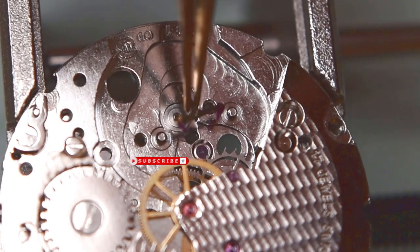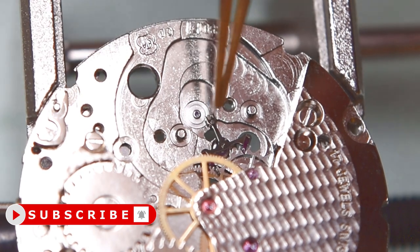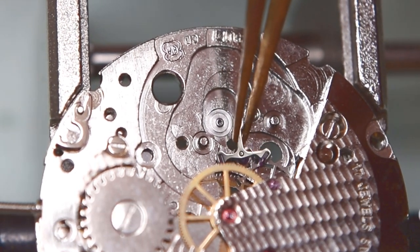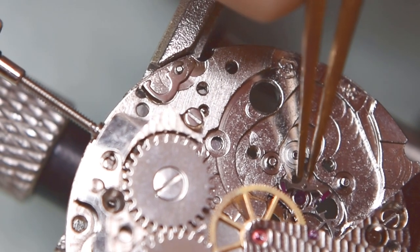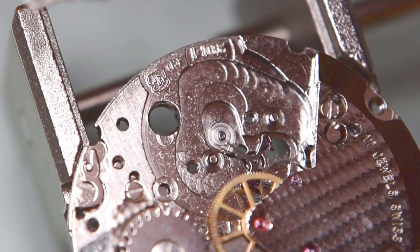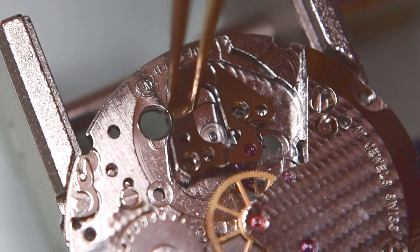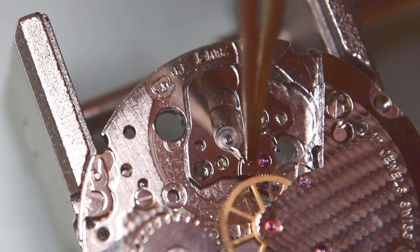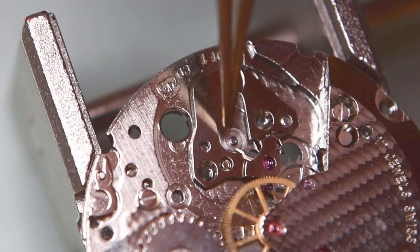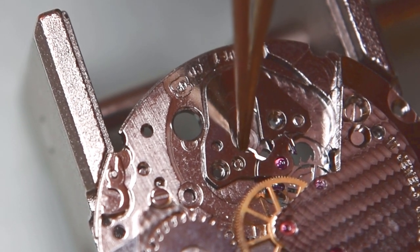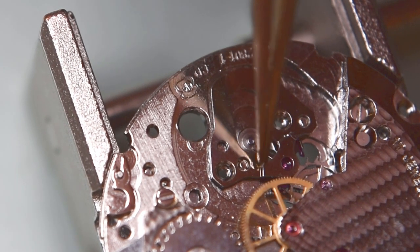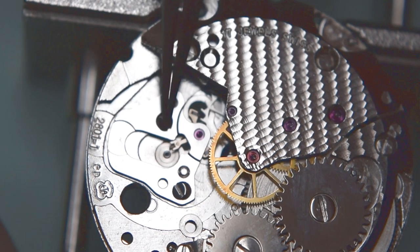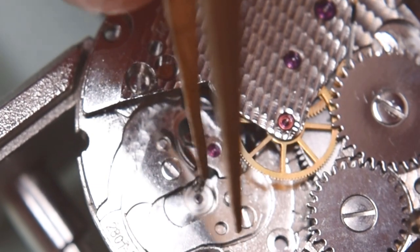Now the pallet fork. This is a very delicate part. And remember we have here 2800 beats per hour. So the pallet fork is a bit smaller here. And we have more teeth on the escape wheel. Now the bridge from the pallet fork. Now I have to only secure the bridge, or the pallet fork. And as we see it's working. So that's good.